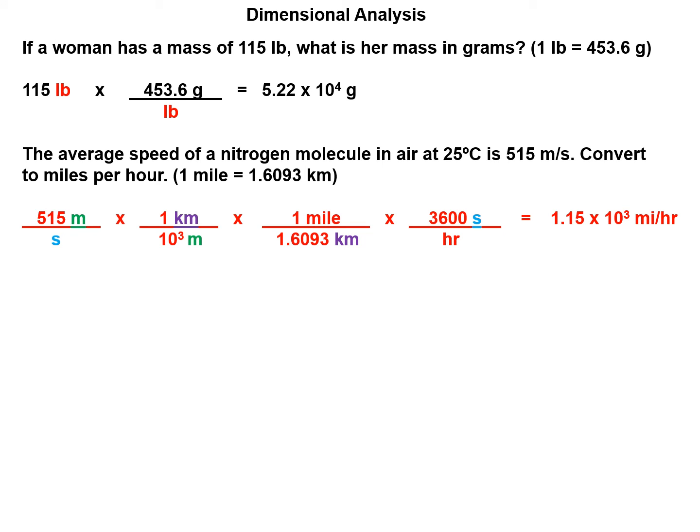So we take 515 meters per second times one kilometer per 1,000 meters times one mile per 1.6093 kilometers times 3,600 seconds per hour. Notice kilometers in purple cancel out, meters in green cancel out, and seconds in blue cancel out. So what we're left with in red is miles per hour. So 515 divided by 1,000 divided by 1.6093 times 3,600 equals 1.15 times 10 to the third miles per hour.